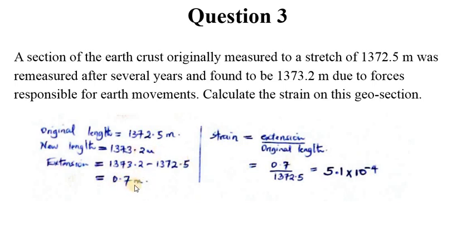You'll have 1373.2 minus 1372.5 and that gives us 0.7 meters. This is not a big length, but you can see we have talked about several years. You may not notice this but it may abruptly occur depending on which force is responsible or slowly occur depending on the kind of earth movements we have.